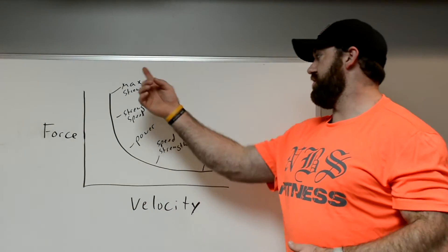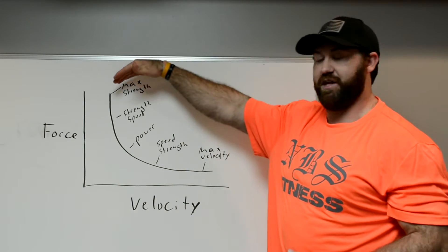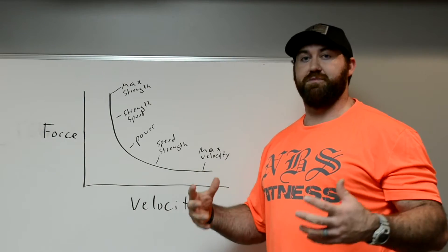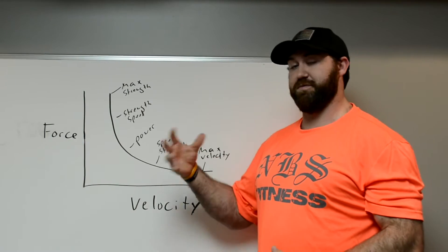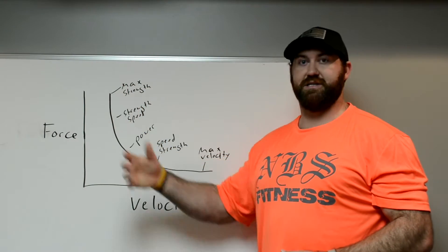Alright so next we can go over some of the terminology that you see here. So on opposite ends we have max strength, max velocity. Max strength is your ability to produce maximum force output, maximum contractile potential of a muscle. So this would be things like one rep max, squat, bench, deadlift.